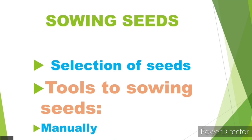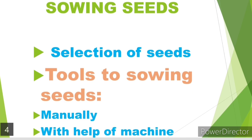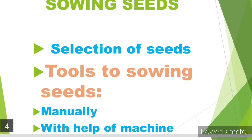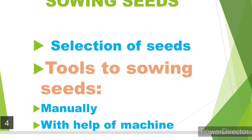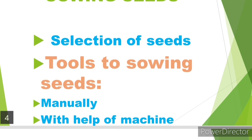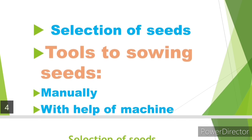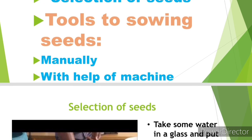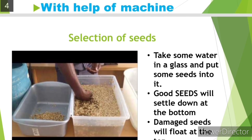Sowing seeds comprises two processes: selection of seeds and the tools used for sowing seeds. The tools for sowing seeds can be of two types — manual or by the help of a machine.